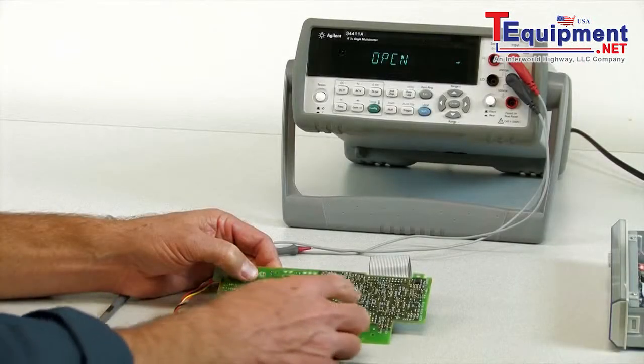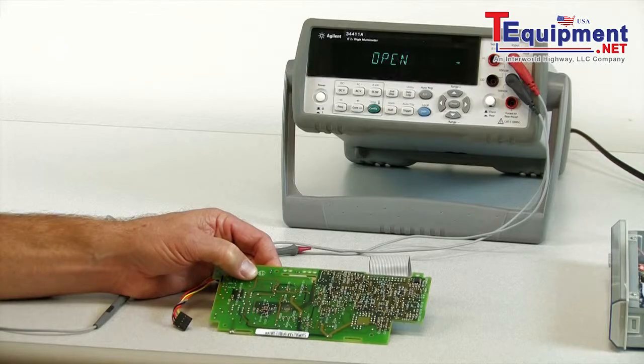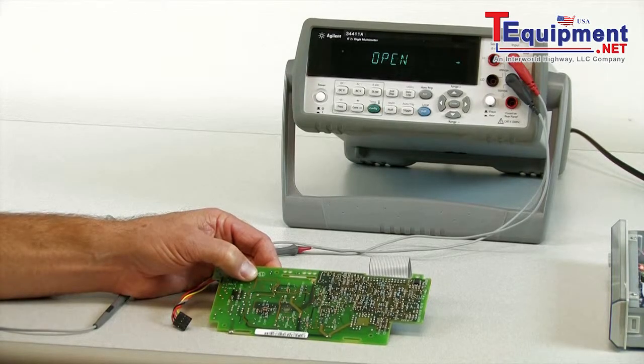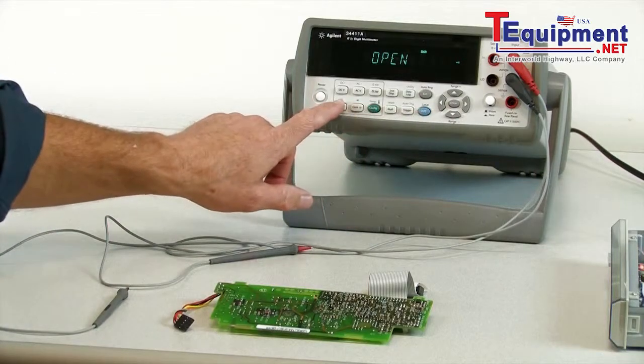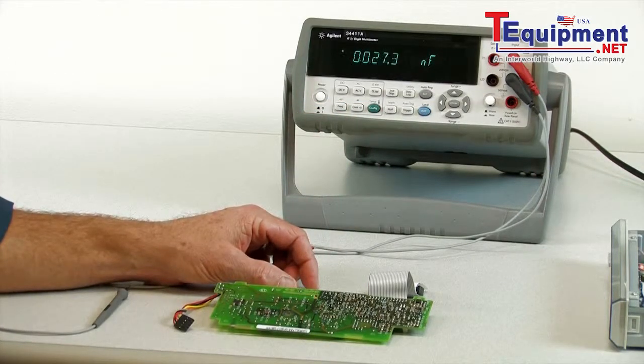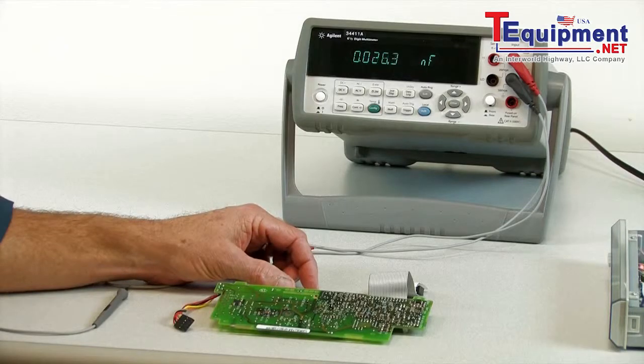On a modern PC board, you have a lot of very small components, many of which aren't labeled. So another nice feature of this DMM is it includes capacitance measurements. If you have an unlabeled capacitor, you can easily see what value it is.